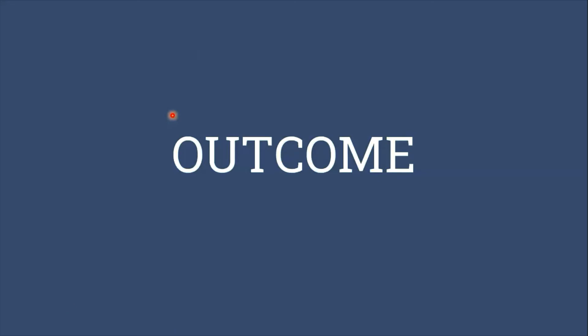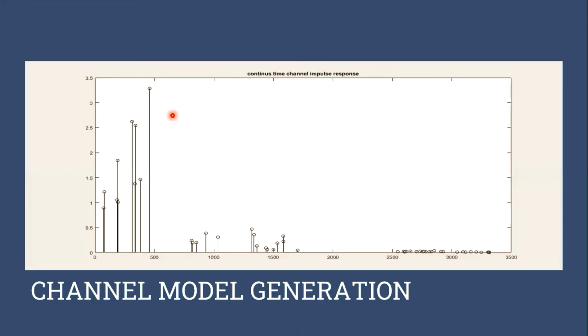The outcome gathered for this project can be categorized into two parts: first is channel model generation, and second is a simple correlation-based time of arrival estimation method. This is the output shown from the MATLAB graphical user interface. The coding was inserted into the command window and this is the output. Considering the maximum length of the channel and the maximum duration of each cluster, we generate the arrival time of each cluster using a uniform random generator.